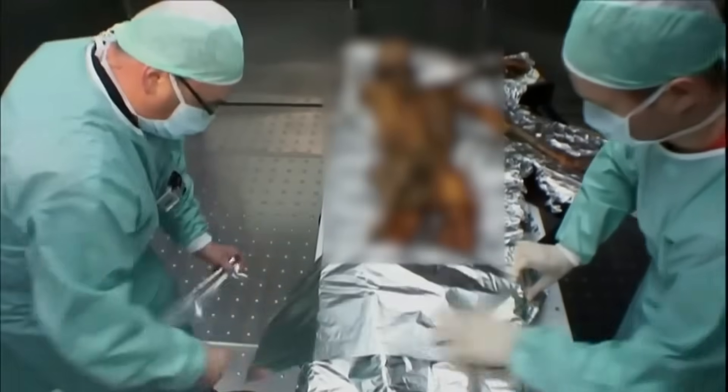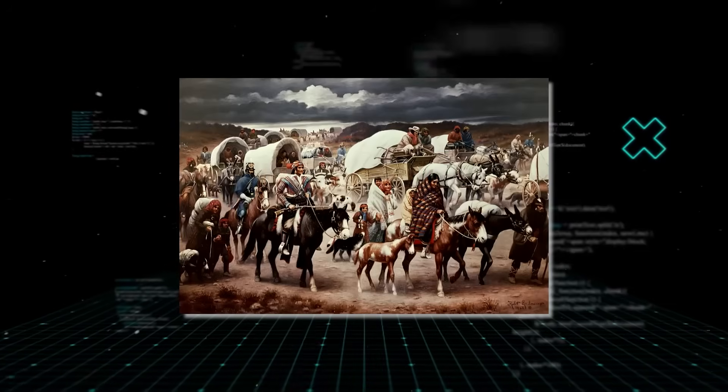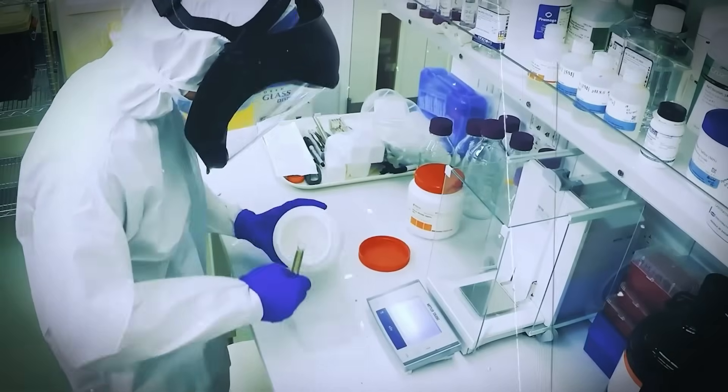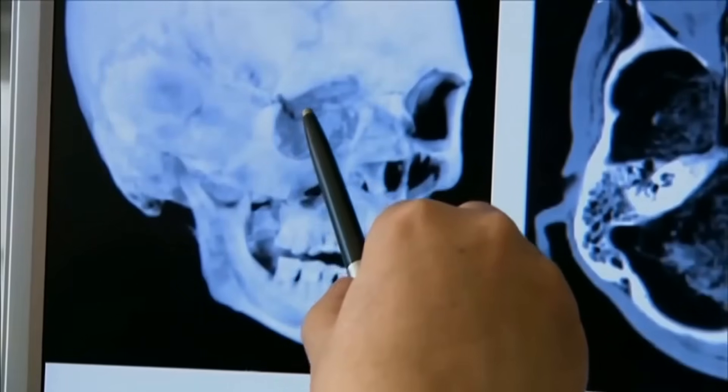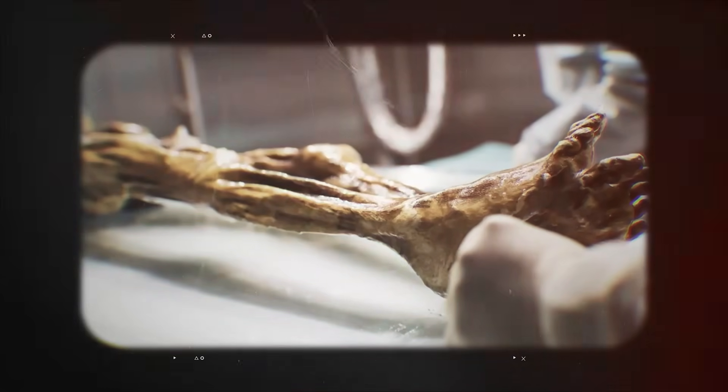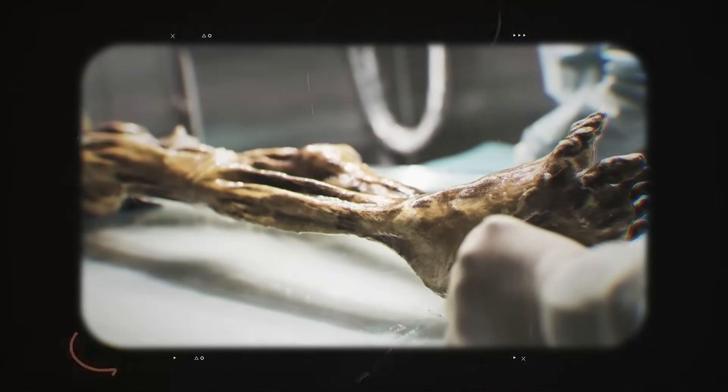The groundbreaking 2012 study was fundamentally flawed. Ötzi was not a genetic bridge. He didn't rewrite the migration timeline. The story that had been told for over 10 years was, simply put, wrong. It was a humbling moment for science, a powerful lesson that even the most exciting discoveries need to be double and triple checked. With the old story erased, his true genetic code revealed a shocking origin.